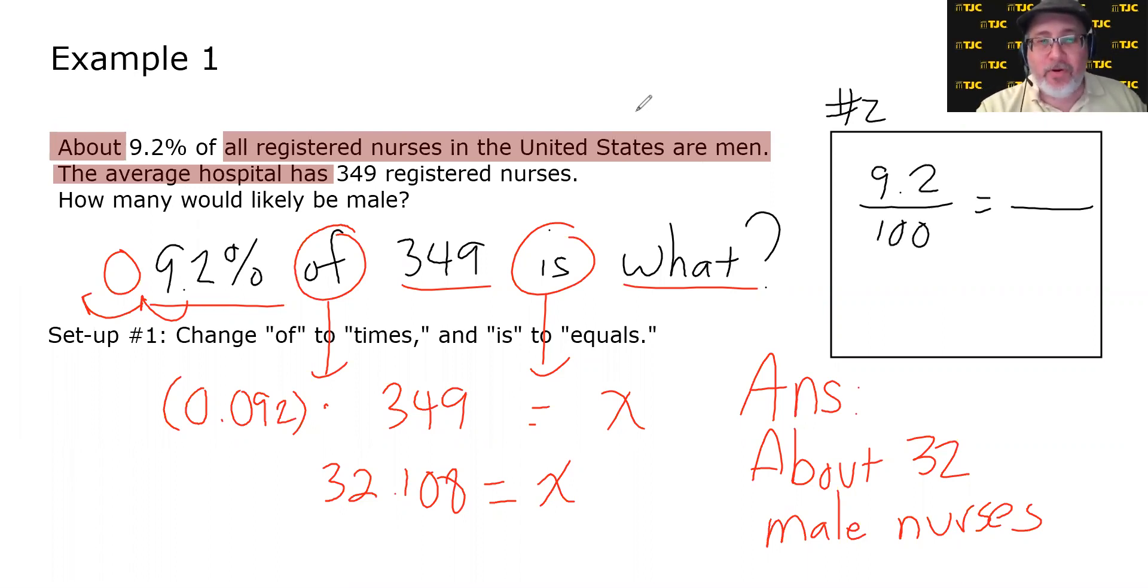Put the is number, which we don't know, on top, put the of number, which we do know, on the bottom. Cross multiply and solve. And if we do that, we're going to get the same answer, 32.108, which rounds to 32. So this one wasn't too bad once you extracted the key elements of the word problem and got here, because then it was pretty straightforward.